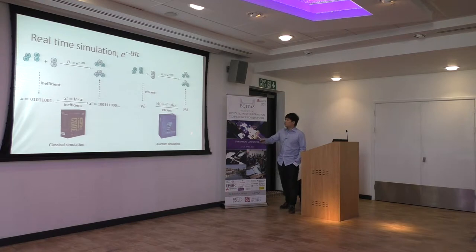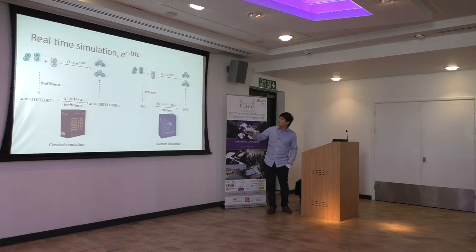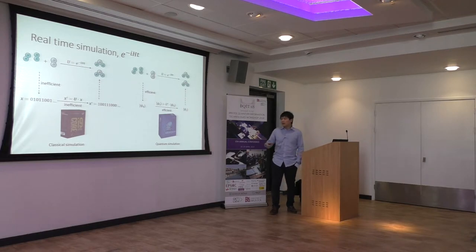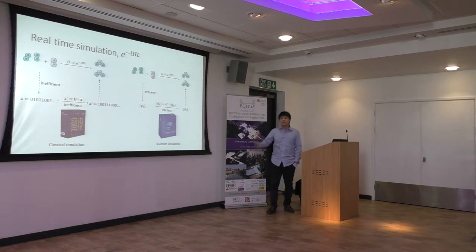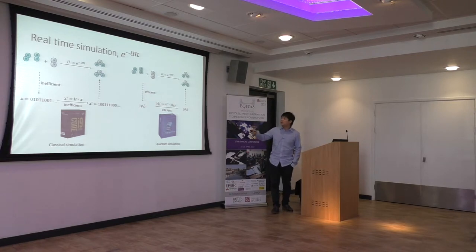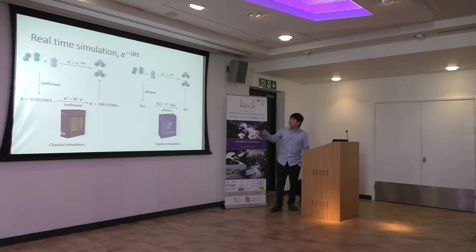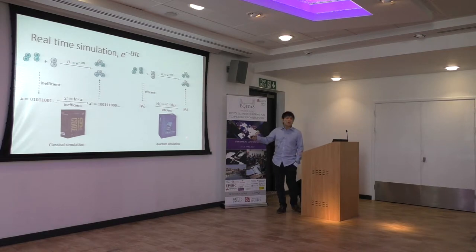For a quantum computer, suppose we have a universal quantum computer — we can first encode the quantum states into qubits. For many realistic physical systems we can do this quite efficiently, and the evolution of real time gives just a unitary operator. Since the quantum circuit is also a unitary operator, we can simulate the unitary operator with quantum circuits, for example with the Trotter-Suzuki decomposition method. In general we can simulate many-body systems using a quantum computer efficiently.